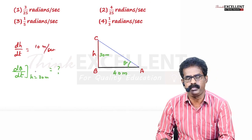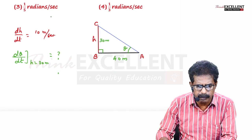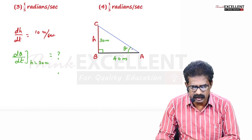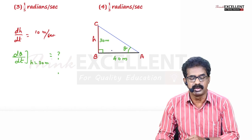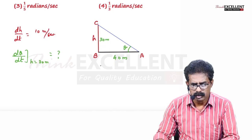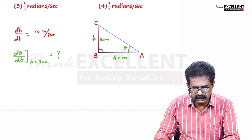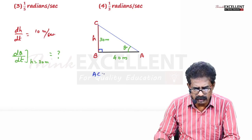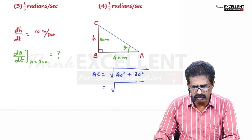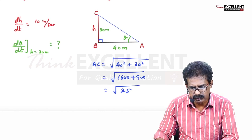This is a right-angle triangle. We want the angle, not the slant height, so we use tan. Also, we need AC using Pythagoras theorem: angle B is 90°, so AC = √(AB² + BC²) = √(40² + 30²) = √(1600 + 900) = √2500 = 50 meters.